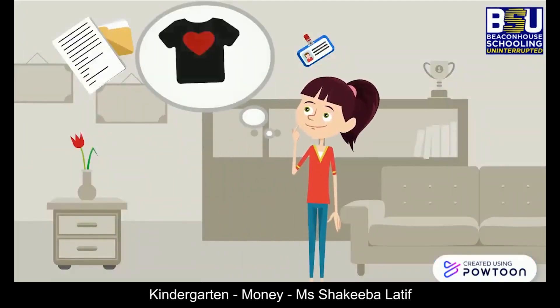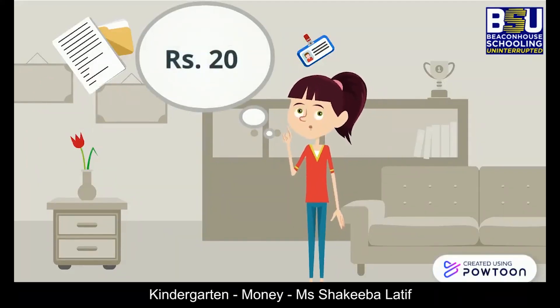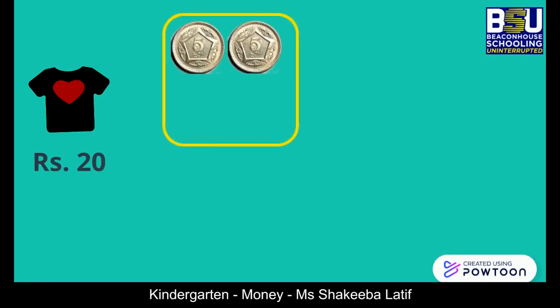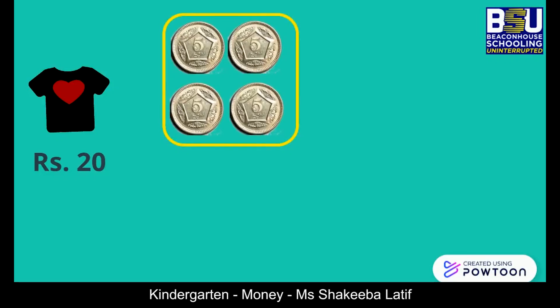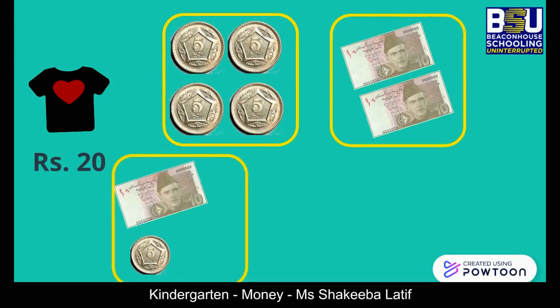Next, she wants to buy a shirt for her mother and the cost of the shirt is 20 rupees. To pay for it, she can count in fives — four fives make twenty. She can also count in tens — two tens make twenty. She can also pay with a 10-rupee note and two 5-rupee coins.